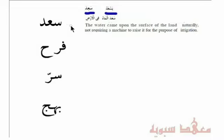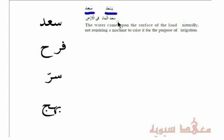But it actually means other things as well. For example, in this sentence: Sa'dah al-ma'u fil-ard — the water came upon the surface of land naturally, requiring a machine to raise it for the purpose of irrigation. So that's something that will make somebody happy: if they want to irrigate the land and it happened just like that, without anybody doing anything — cause for happiness. So Sa'dah actually means things going your way in life.